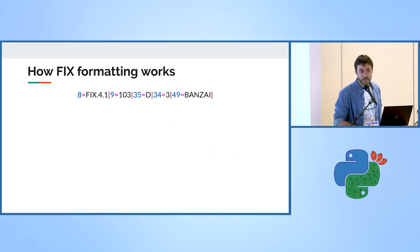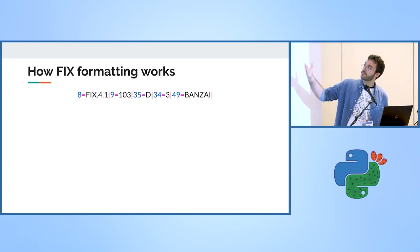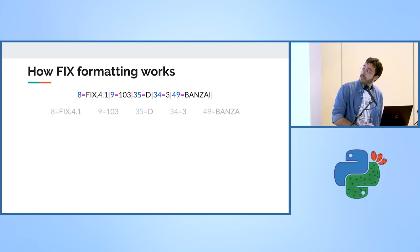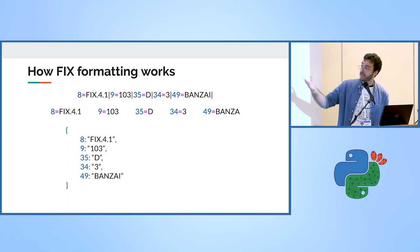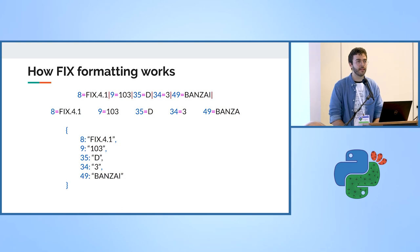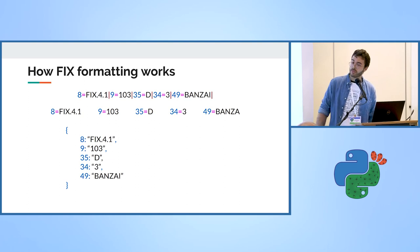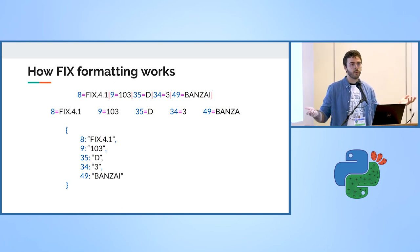A FIX message is a string format delimited by a special character. Between the splits there is a key-value pair separated by an equals sign. If you split by the special character you get the key-value pairs, then you can create a dictionary of the tag and value. The tag is an enum to make the data smaller, and some values are also enums — for example, tag 35 stands for message type and 'D' stands for new order single, meaning I want to create a new order in the market.